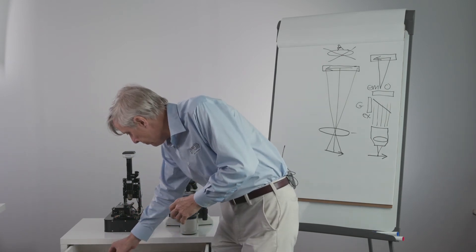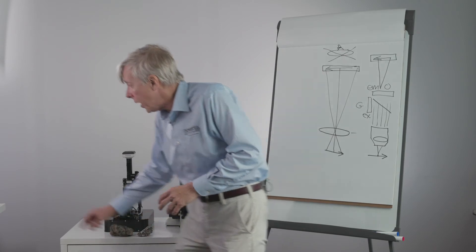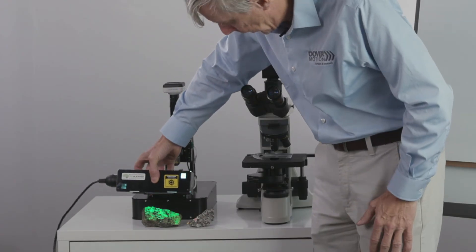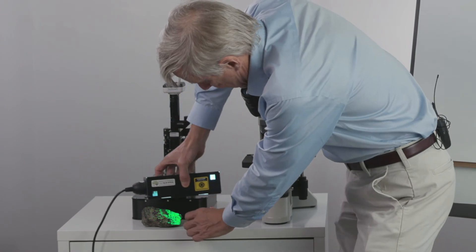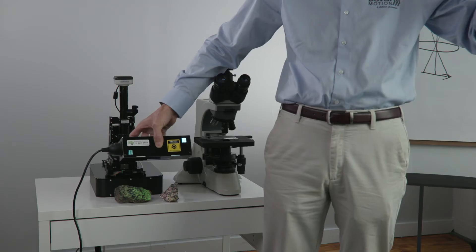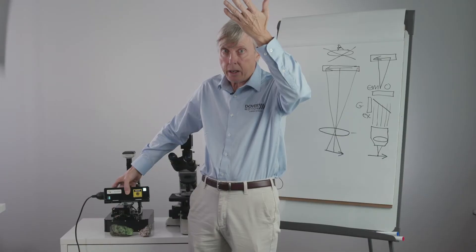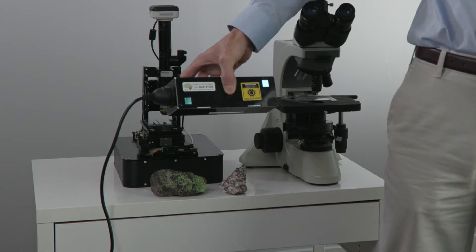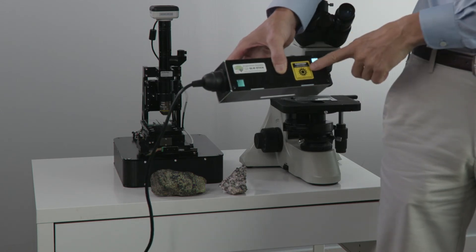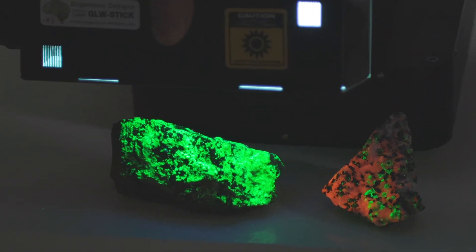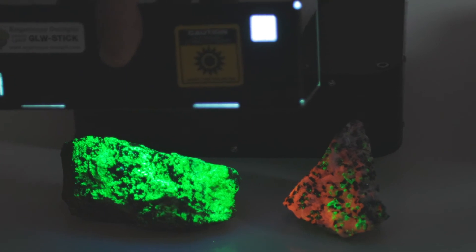Here's an example of fluorescence: some minerals, when excited with ultraviolet light, will fluoresce red and green in the visible — green willamite and red calcite. The excitation light is high-energy ultraviolet. It hits the atoms, their electrons are excited to a higher energy state, and when they decay back down they emit light that is redder — in this case, green and red, which is redder than ultraviolet. Reducing the ambient light makes the effect even more pronounced: green willamite and red calcite, each excited by ultraviolet wavelengths of 257 nanometers.